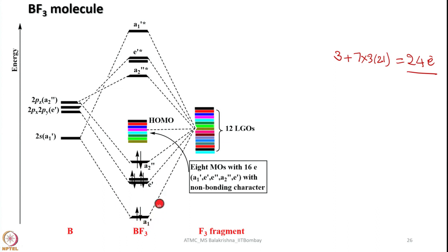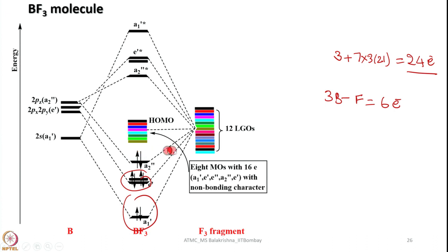In the MO diagram for BF3, 2 electrons here, 4 electrons, and 6 electrons represent the 3 B-F sigma bonds — 6 electrons account for 3 B-F bonds. An additional 2-electron contribution comes from one of the lone pairs of a fluorine atom donated back to boron, as shown in the Lewis dot structure. Boron uses 6 electrons for the three bonds, and the remaining electrons satisfy each fluorine's octet. Counting all: 24 electrons are accounted for.